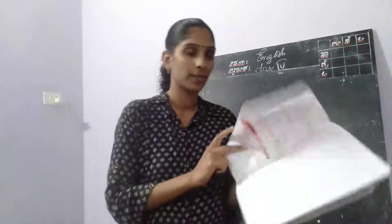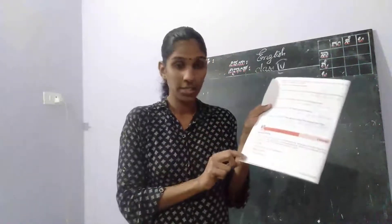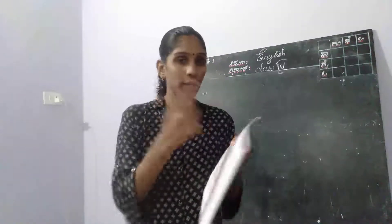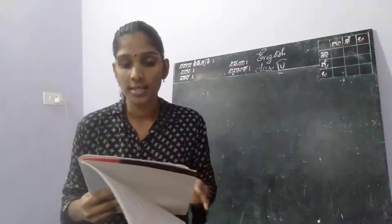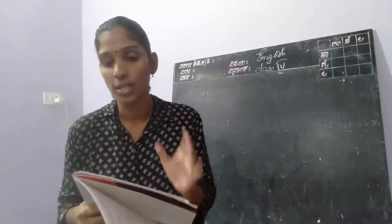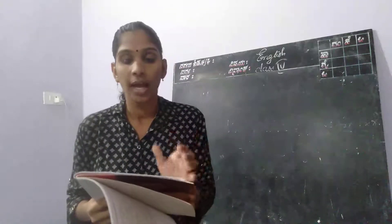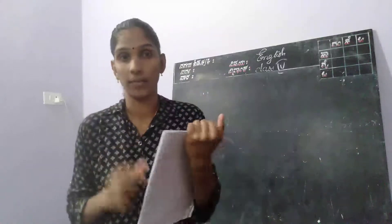That was the first activity. Please turn to page number 14 — one more activity is there. Rewrite the following sentences using object pronouns in place of the underlined words and phrases. In each sentence there are some underlined words; we have to write objective pronouns for them.